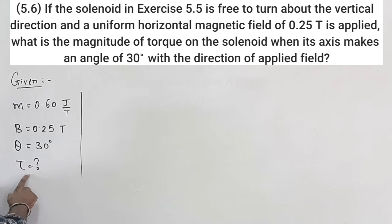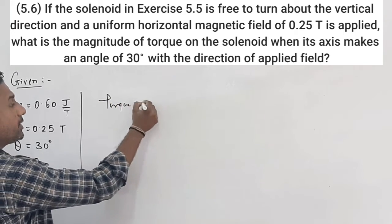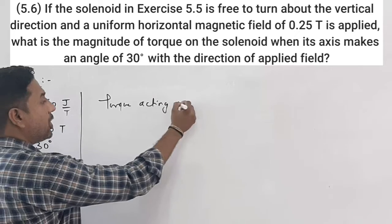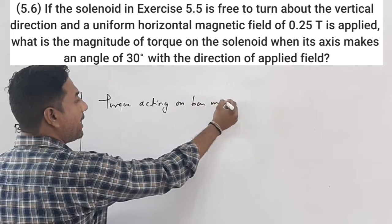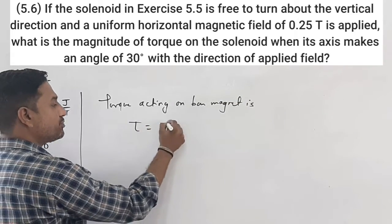So the question is what is the torque acting on the bar magnet? So the torque acting on bar magnet is tau equals m cross B.